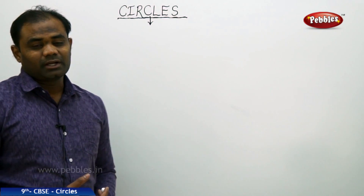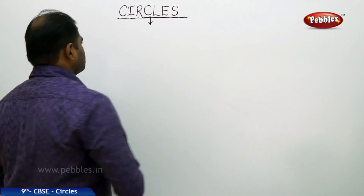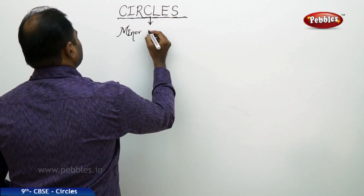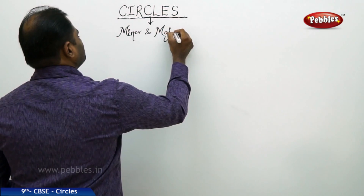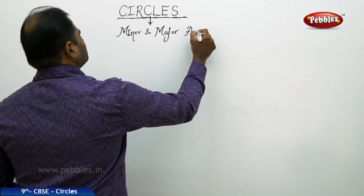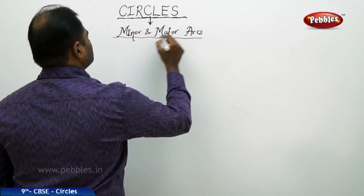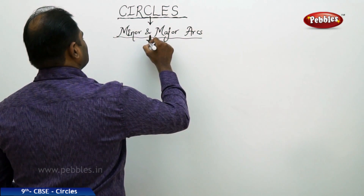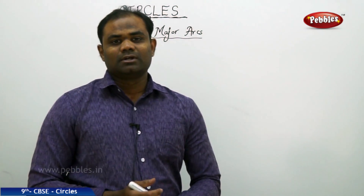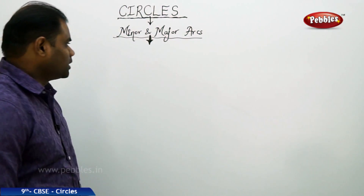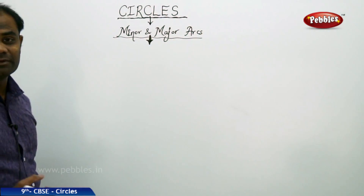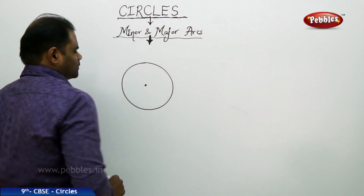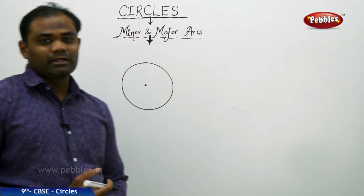This session is about major and minor arcs for a circle. Let's see the definitions in brief. Let me take a circle in order to understand the two basic definitions: the minor arc and the major arc.